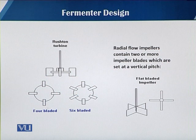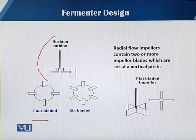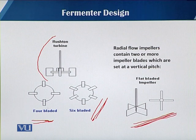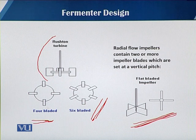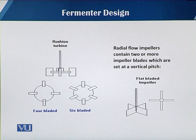In this slide you can see different types of radial flow impellers. This one is known as the Rushton turbine, as we have seen in a previous module. Here we have a four-blade and a six-blade flat blade impeller. These represent different types of radial flow impellers with varying shapes and blade configurations. Impellers are basically associated with the blades — sometimes there are four blades and sometimes there are six blades, so the number of blades is also an important part of the impeller system.